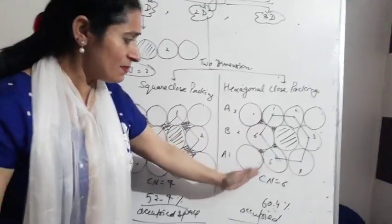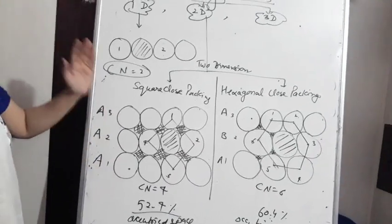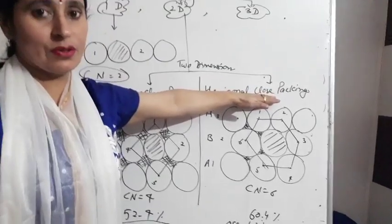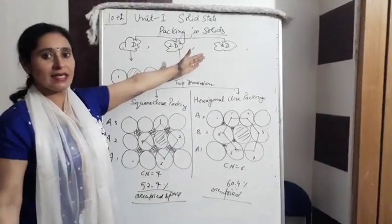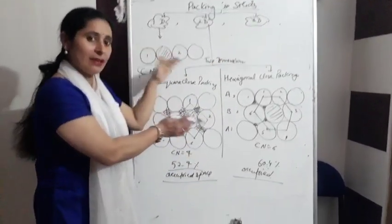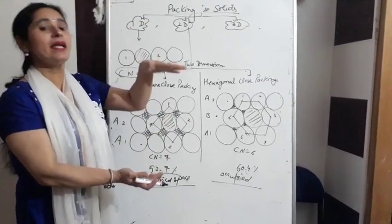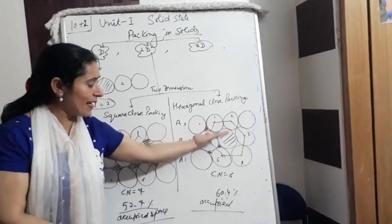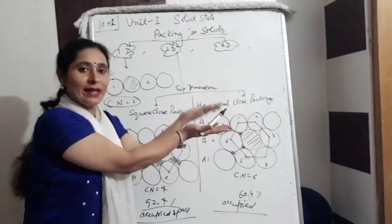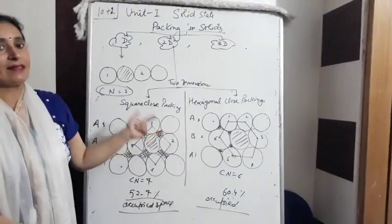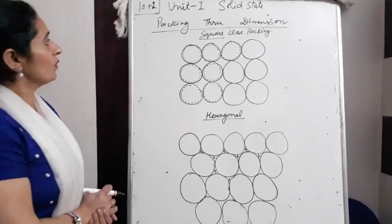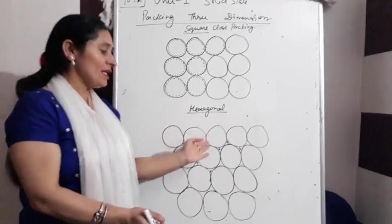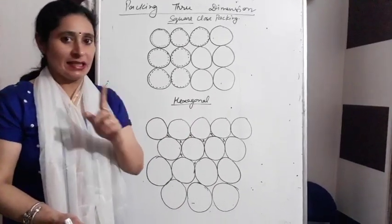Hexagonal close packing has more atoms and is more efficient. That was packing in one and two dimensions — square close packing and hexagonal close packing. Now we will talk about packing in three dimensions, because the crystal also grows height-wise. One layer stacks on top of another, and we'll see how.